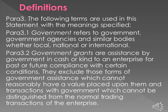Definitions — Para 3: Para 3.1: 'Government' refers to government, government agencies and similar bodies, whether local, national, or international. Para 3.2: 'Government grants' are assistance by government in cash or kind to an enterprise for past or future compliance with certain conditions. They exclude those forms of government assistance which cannot reasonably have a value placed upon them, and transactions with government which cannot be distinguished from the normal trading transactions of the enterprise.